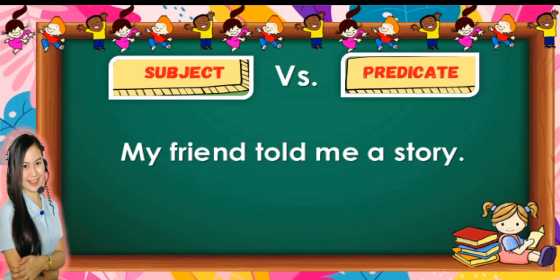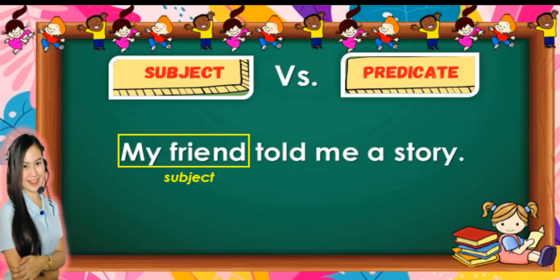Let's read another example, everybody. My friend told me a story. What do you think is the subject in this sentence? Good job! The subject is 'my friend,' and the predicate is 'told me a story.'